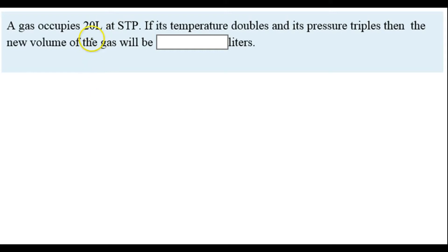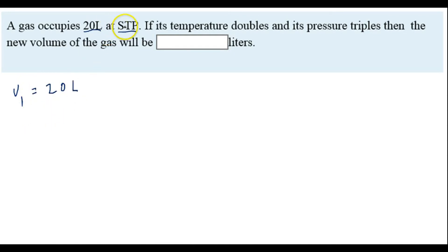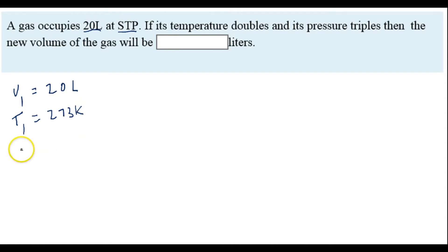We have a gas that's occupying 20 liters of space at STP, so V1 is 20 liters. Because it says STP, anytime we see STP we know that the temperature is 273 K, so T1 is going to be 273 K. And whenever we see STP, we know the pressure is one atmosphere.